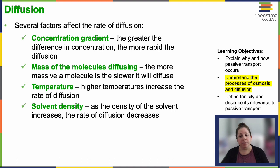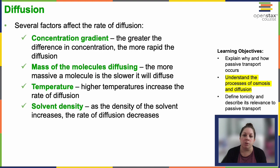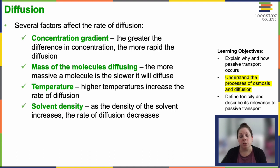Several factors can affect the rate of diffusion. First is the concentration gradient itself — the greater the difference in concentration, the more rapid the diffusion will occur. The mass of the molecules diffusing matters as well; really massive molecules are going to diffuse more slowly, and in some cases they're too big to pass through the membrane itself and will have to find a channel. Temperature impacts diffusion too — higher temperatures feed more energy into the system, molecules move more rapidly, and can diffuse across the membrane more rapidly as the membrane loosens a little bit.